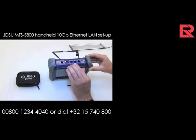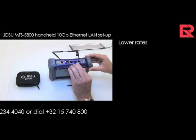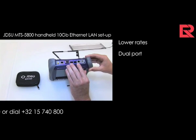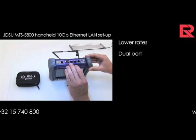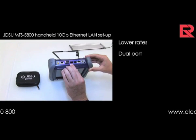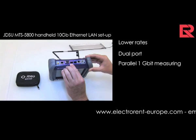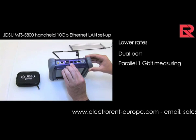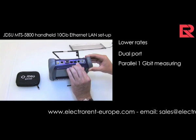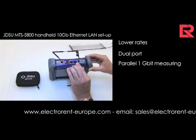If you are measuring lower rates, you have a dual port. A dual port means on this one port you can measure, for example, one gigabit Ethernet, and then in parallel on the other port.